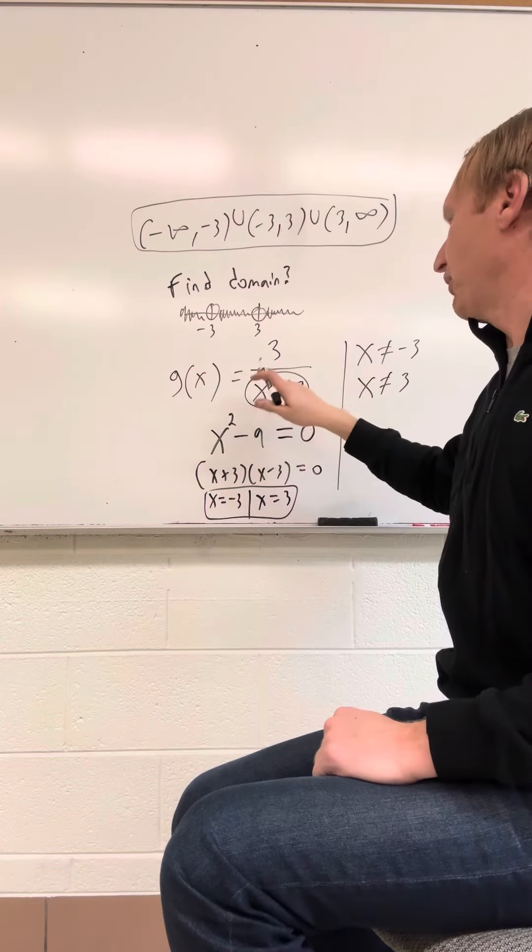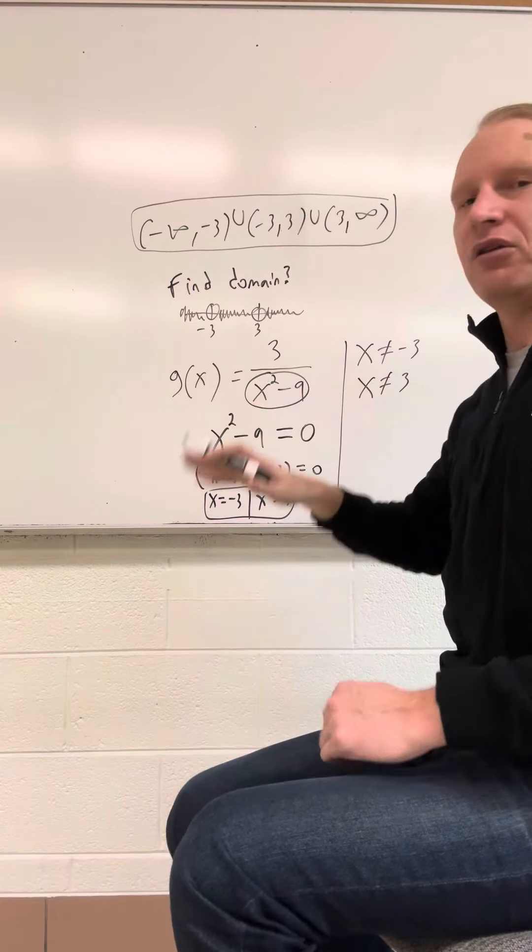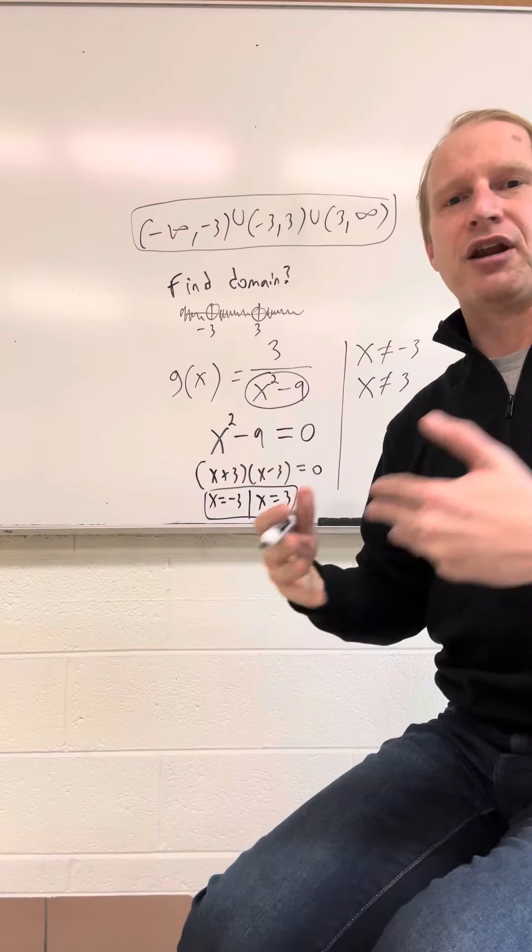And this would be the graph. So, again, you find what values of bottom is zero. Those are the values of x that the function cannot take on.